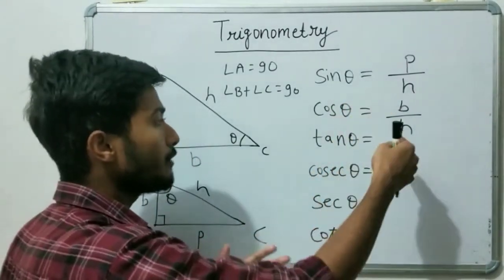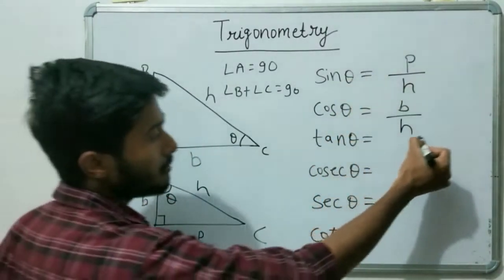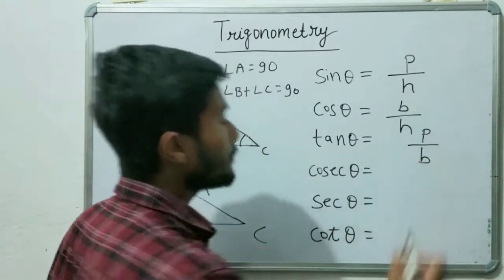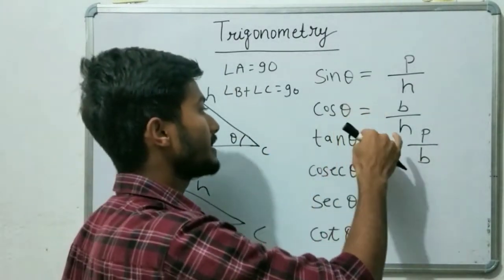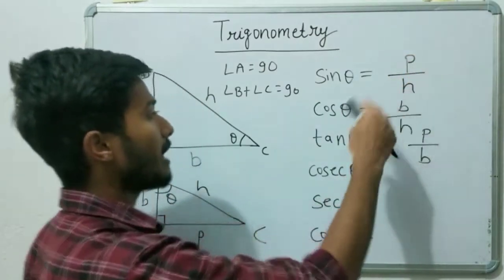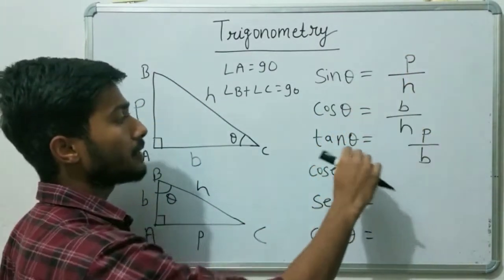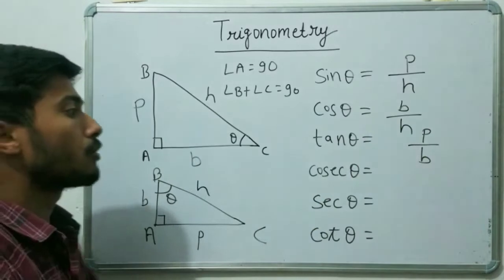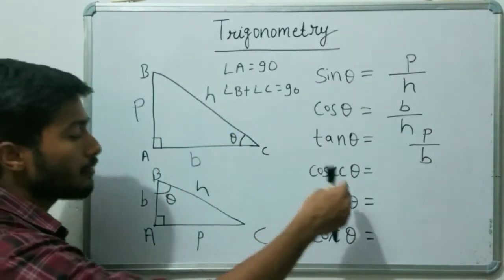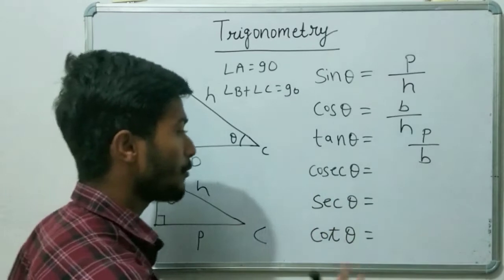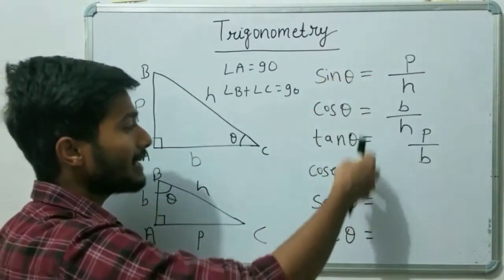Tan theta equals perpendicular upon base. So to summarize: sin theta equals P over H, cos theta equals B over H, and tan theta equals P over B. If you learn these three formulas you can easily find the values of cosec theta, sec theta, and cot theta as well, because there is a relation between these three basic functions and those three.